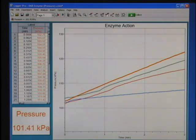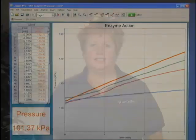With all of the data on one graph, it is very clear that the rate of oxygen production increases with the amount of enzyme catalase present.